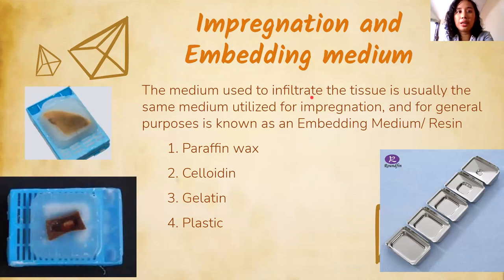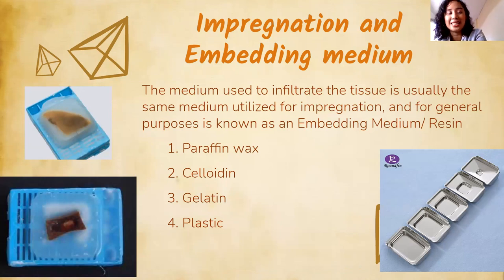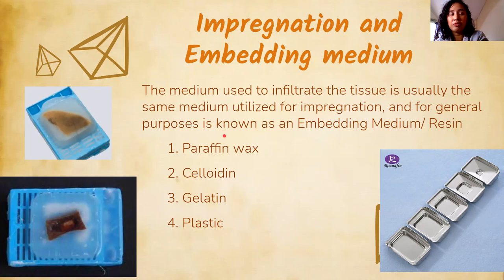The main examples of embedding and infiltration media are: paraffin wax, celloidin, gelatin, and plastic. These are the media we will discuss — around eleven in total. The same medium is used for both infiltration and embedding.